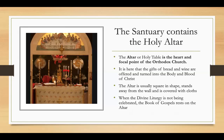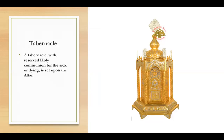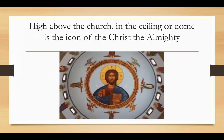The altar is usually square in shape. It stands away from the wall and is covered with cloths. When the Divine Liturgy is not being celebrated, the Book of Gospels rests on the altar. A tabernacle with reserved Holy Communion for the sick or dying is also set upon the altar. High above the church in the ceiling or dome is the icon of Christ the Almighty.